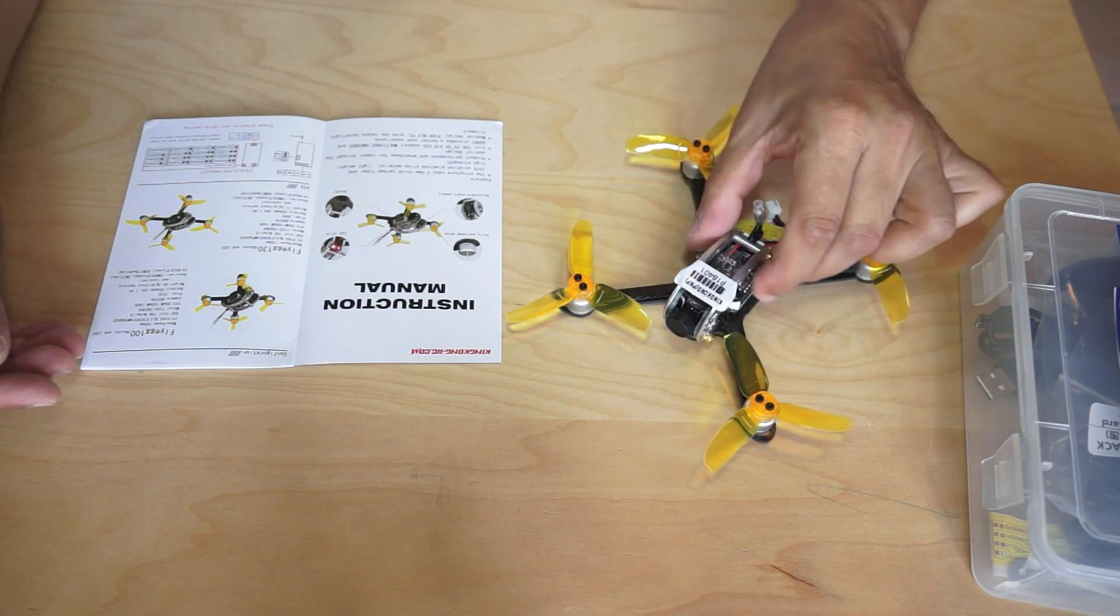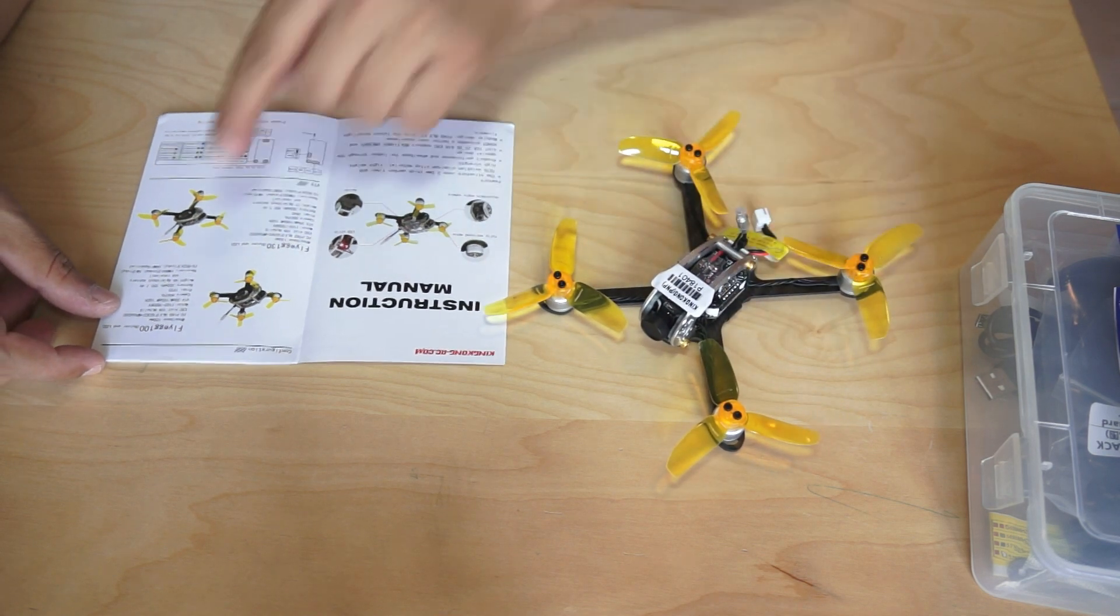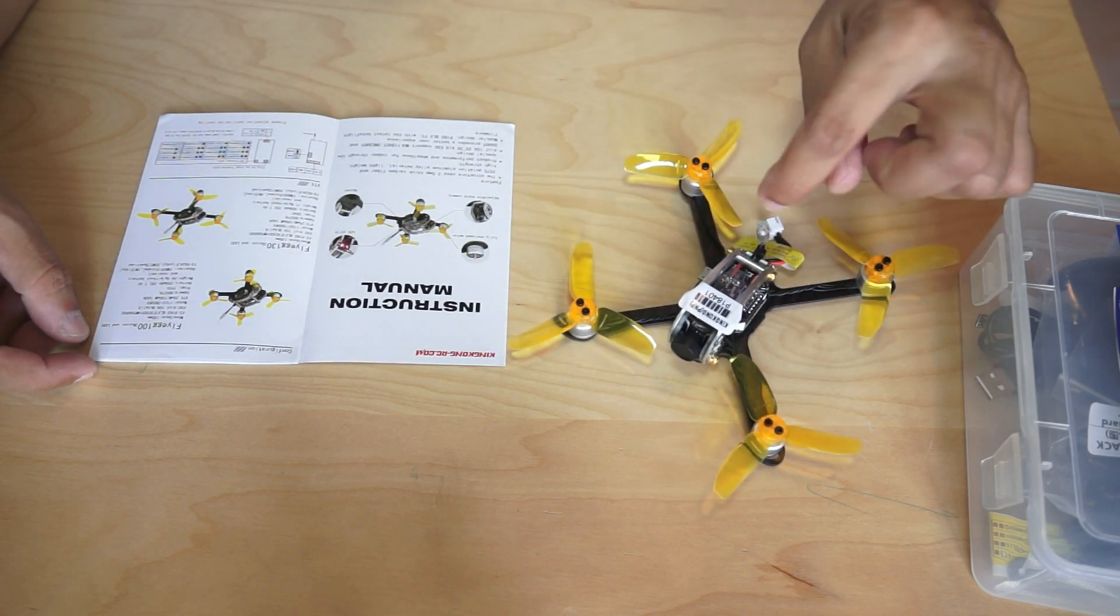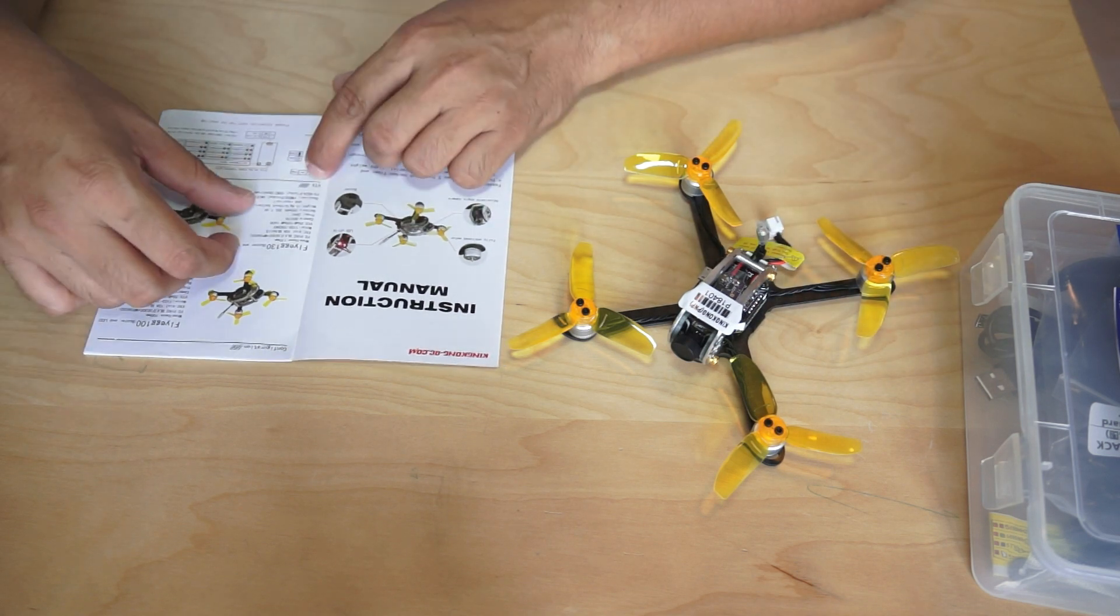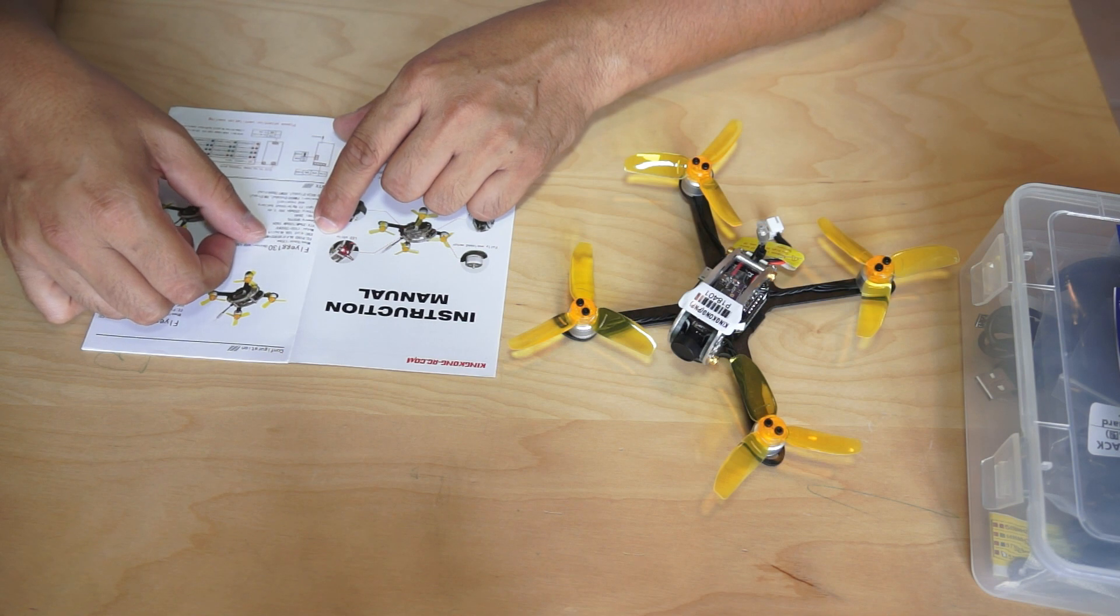So here is 130mm, that is Fly Egg 130mm quadcopter. They also have a Fly Egg 100mm version, so I've got myself 130mm. That is why it was looking bigger. The key features are 4-in-1 10A brushless BLHeli ESCs, brushless BLHeli ESCs.